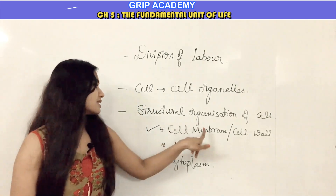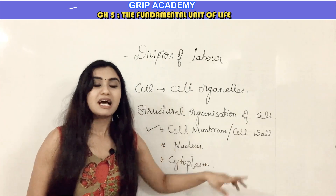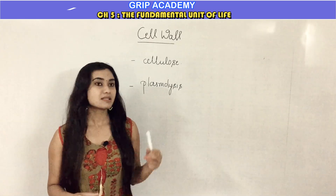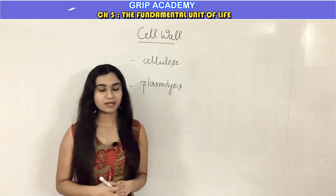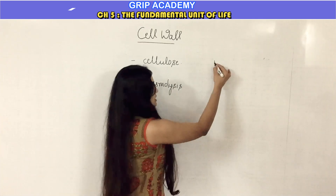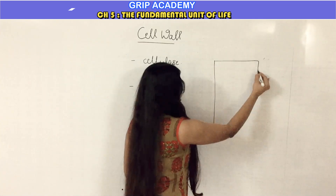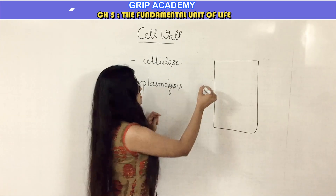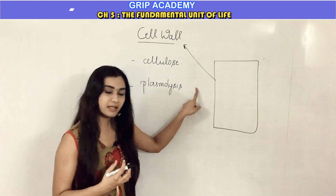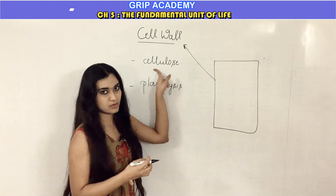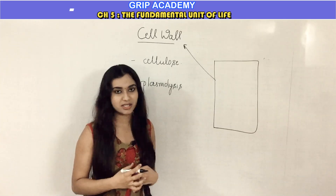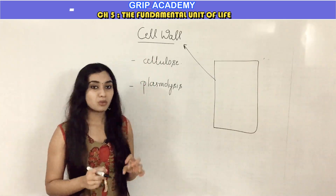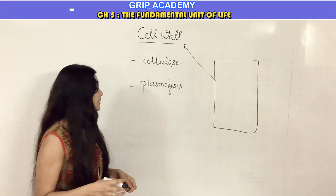Coming to the first structural component — the cell wall. Cell wall is found only in plant cells and not in animal cells. The outermost layer of a plant cell is the cell wall, which is made up of a complex substance called cellulose. This cellulose gives rigidity and turgidity to the plant cell, which is why the cell wall is present only in plant cells.